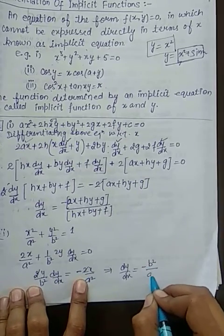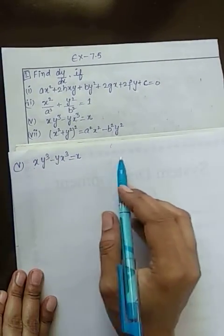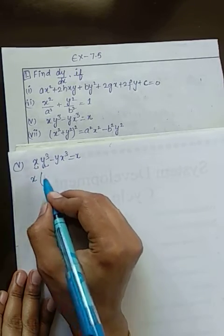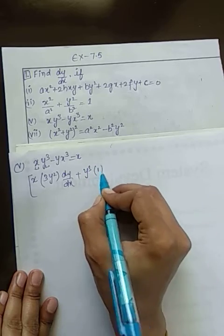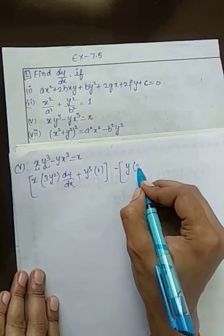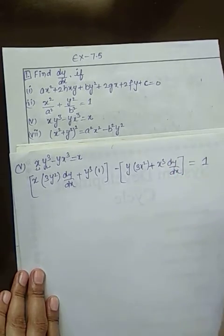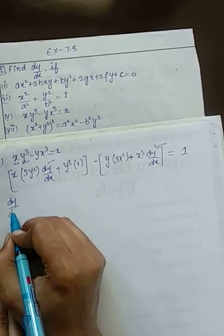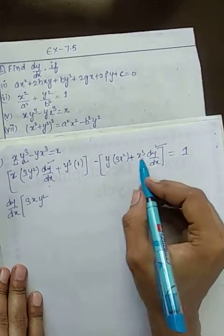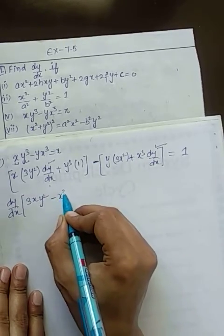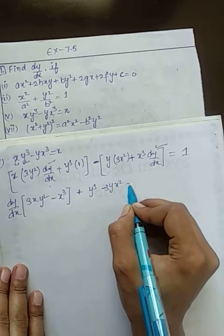Differentiating both sides with respect to x. Yahan par product rule lagega. X as it is, y³ ka derivative 3y²·dy/dx plus y³ as it is, x ka derivative 1 minus y as it is, x³ ka derivative 3x² plus x³ as it is, y ka derivative dy/dx = x ka derivative 1. Ab phir se aap kya karoge, dy/dx wali terms minus se common le lete hai.